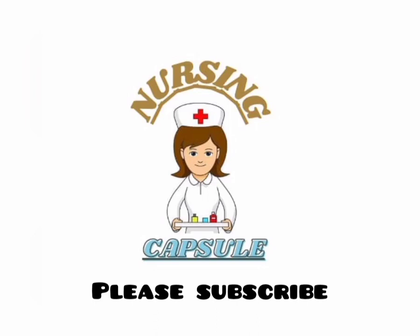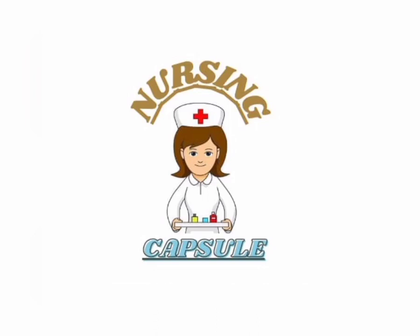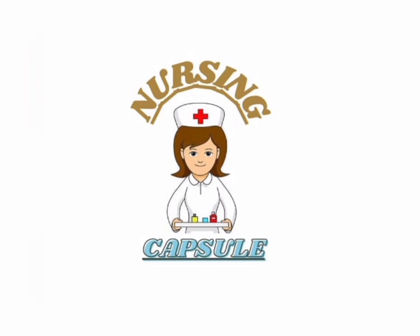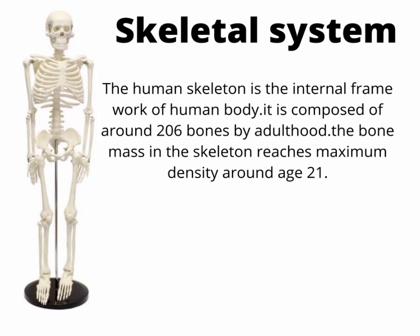Welcome back to Nursing Capsule. If you are watching our channel for the first time, please subscribe to get more videos. In this video, we are describing the human skeleton system. The human skeleton is the internal framework of the human body. It is composed of around 206 bones. By adulthood, the bone mass in the skeleton reaches maximum density around age 21.